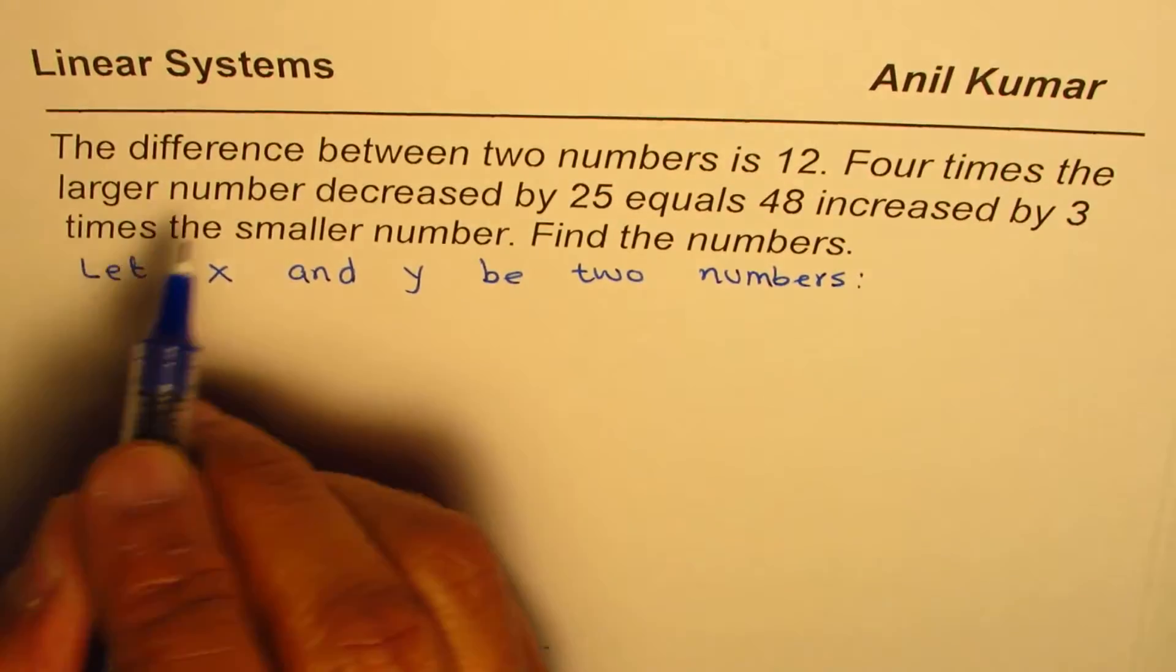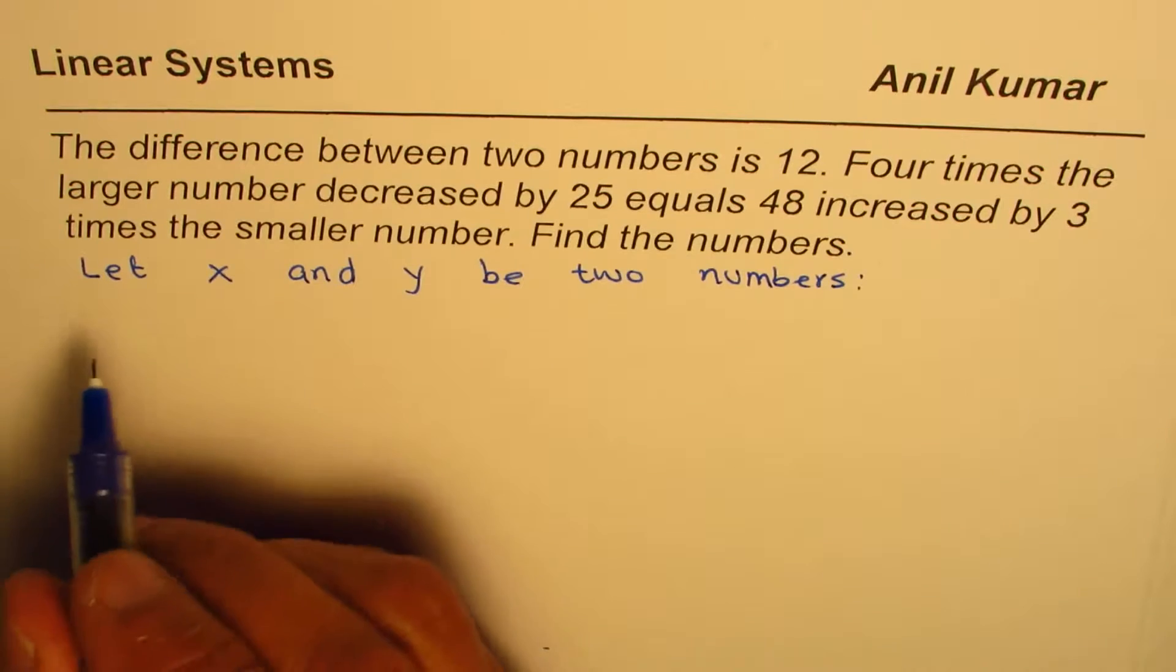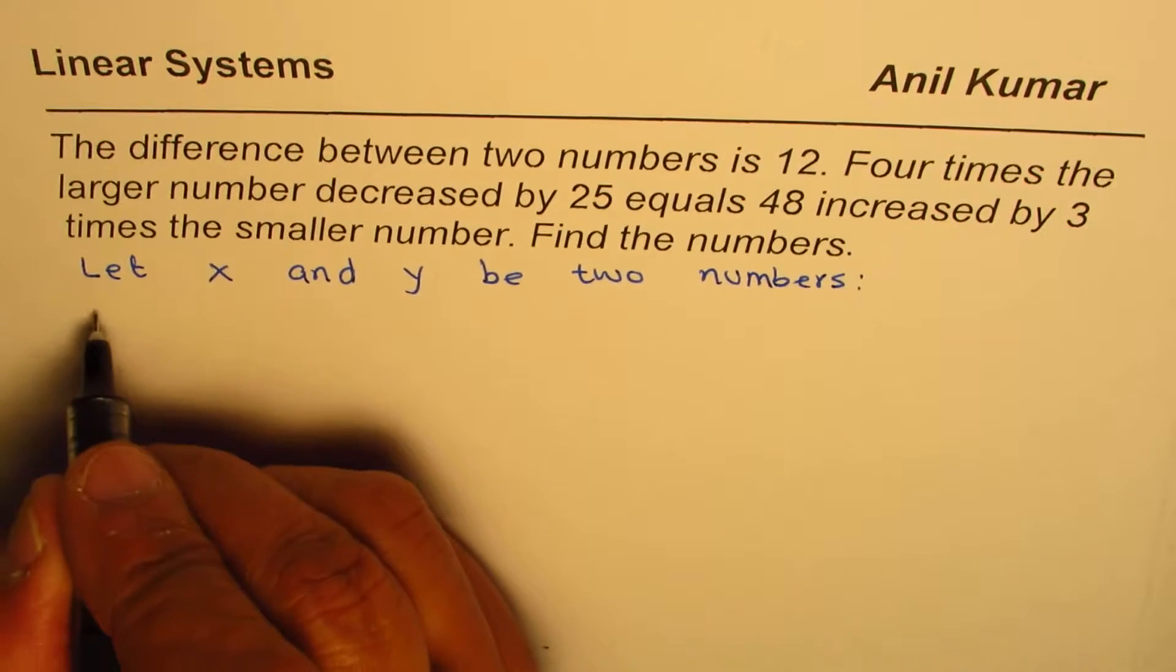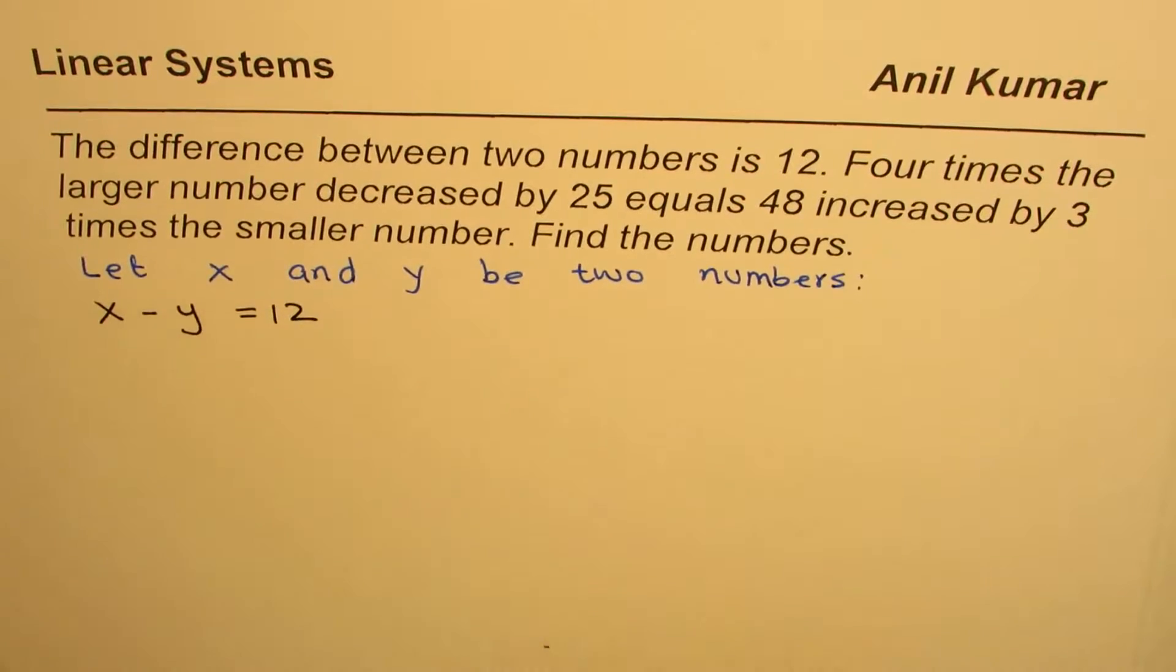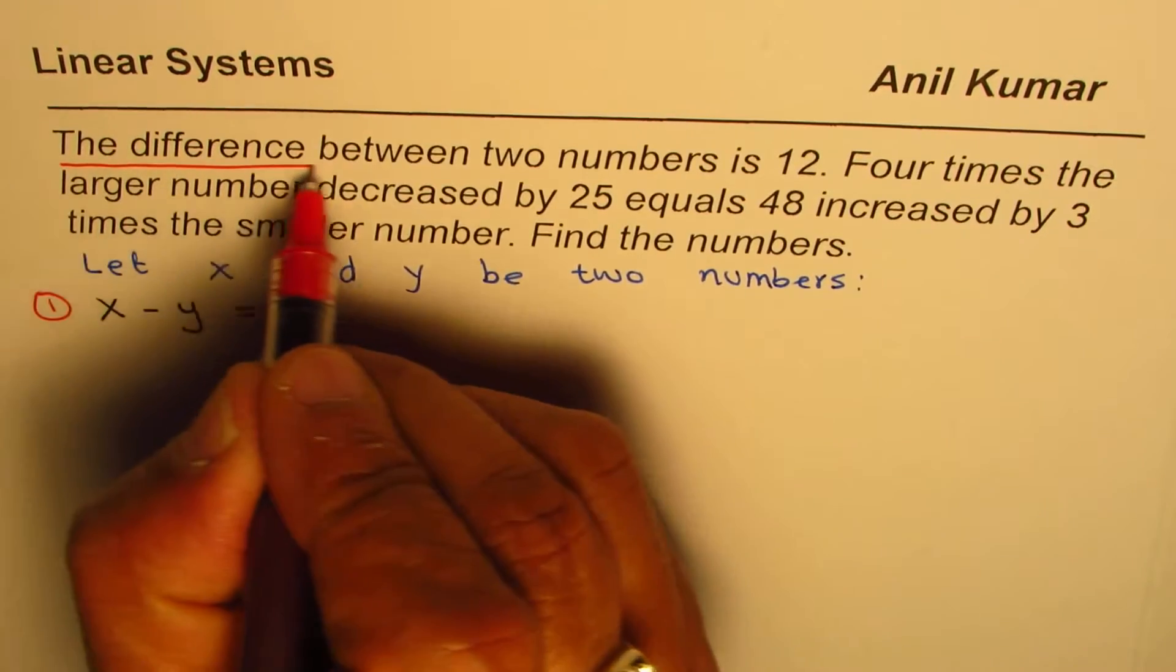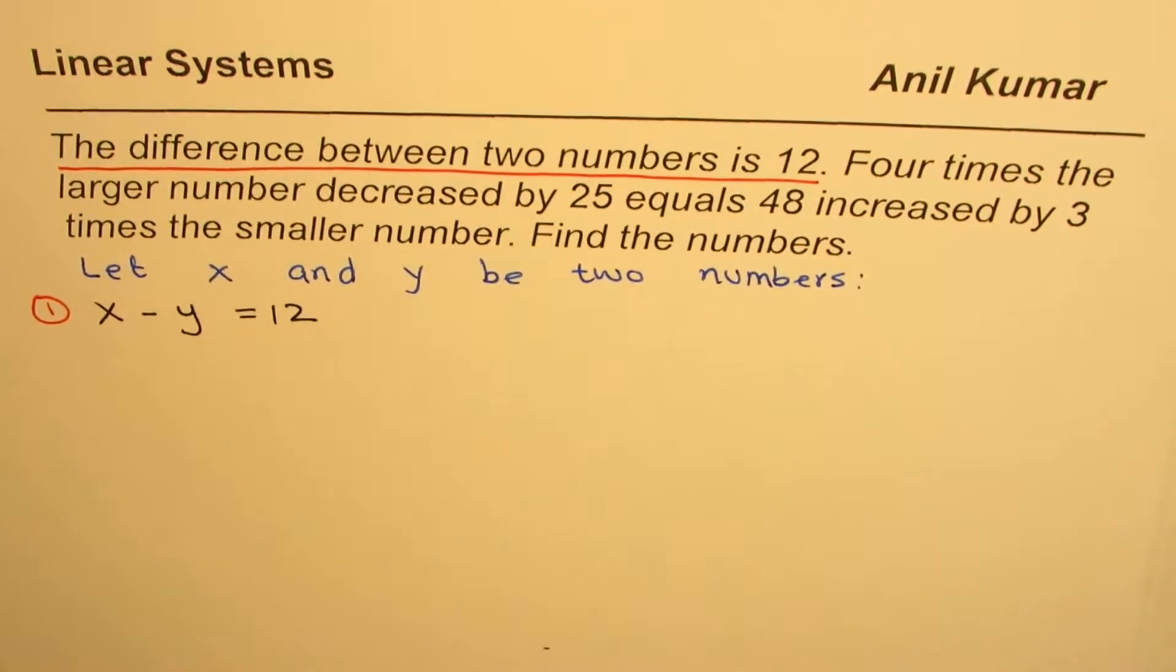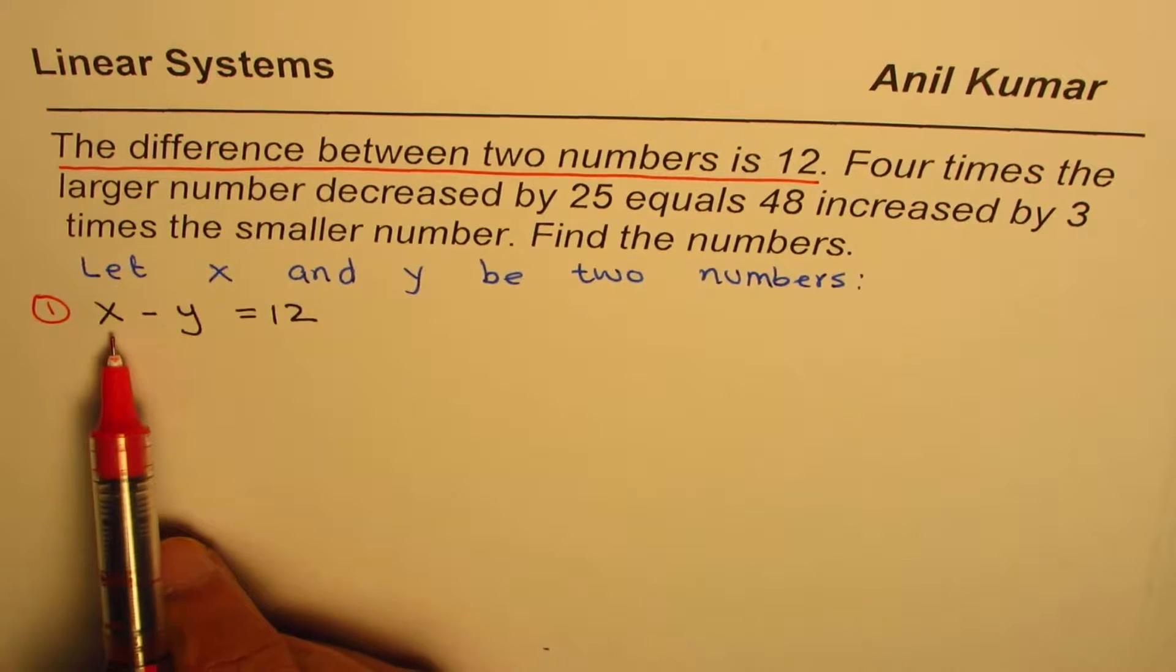From the first statement, the difference between the two numbers is 12, so we get our equation X minus Y equals 12. We'll call this equation 1. When we say X minus Y is 12, X is the larger number.